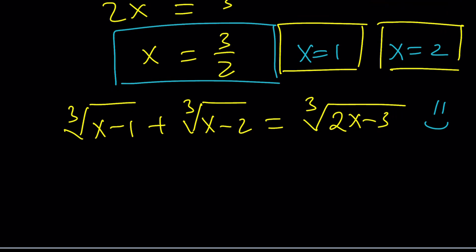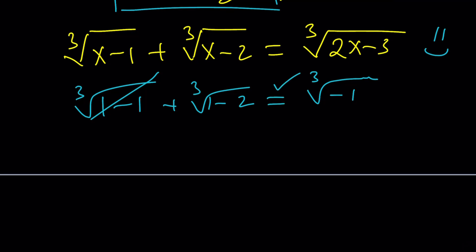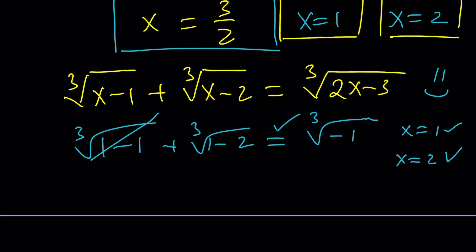So let's go ahead and check out. First 1 and 2 because those are kind of easy. If you replace x with 1, you get 1 minus 1 cube root of that plus cube root of 1 minus 2. Now this gives you 0. This gives you negative 1. And on the right-hand side, if you replace x with 1, you get cube root of negative 1. So they are equal. We're good. If you replace x with 2, same thing is going to happen. So x equals 1 works. x equals 2 works.